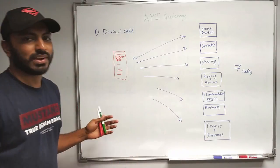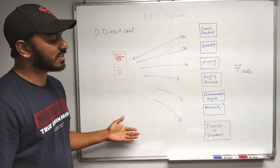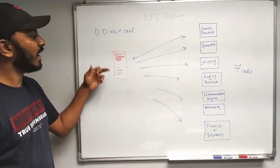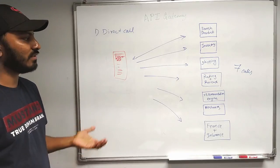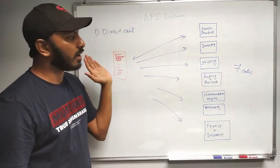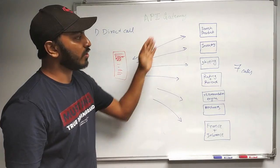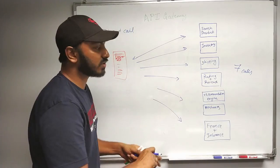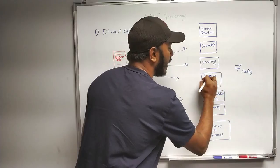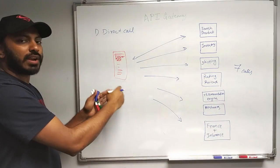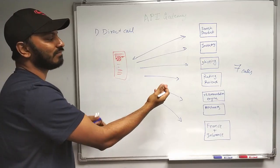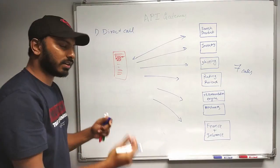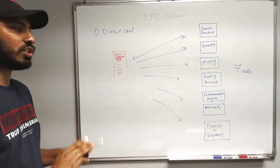Also, the client is tightly coupled to all of these services. For example, if tomorrow I want to split rating and reviews into two different microservices, then I will have to update my client code as well — make one more call to get ratings and one more call to get reviews. So this is not really a good way to deal with it. That leaves us with one more option — the second way to access is called API Gateway.